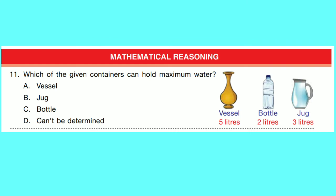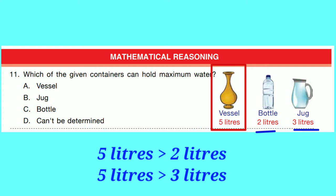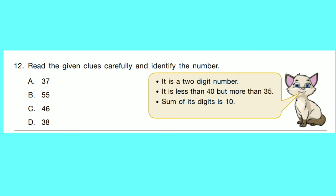Mathematical Reasoning. Question number 11: Which of the given containers can hold maximum water? Vessel: 5 litres. Bottle: 2 litres. Jug: 3 litres. Clearly, the vessel contains maximum water, i.e. 5 litres. So correct option is A.